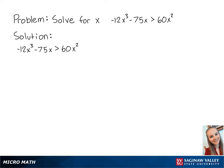For this problem, we're going to solve for x in the inequality negative 12x cubed minus 75x is greater than 60x squared. First, we want to get the right side equal to 0, so we're going to subtract 60x squared from both sides so that we have negative 12x cubed minus 60x squared minus 75x is greater than 0.